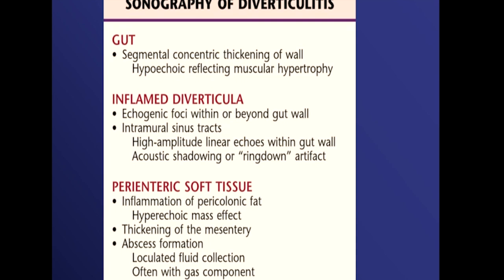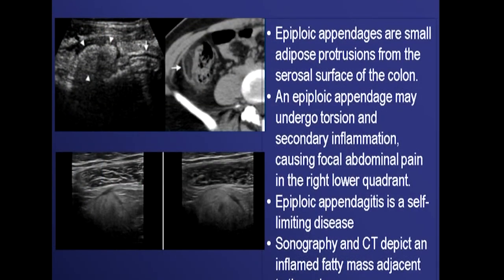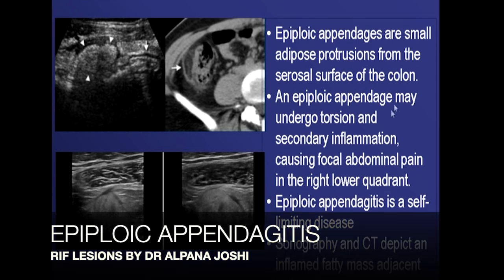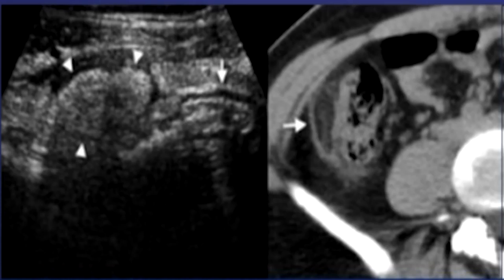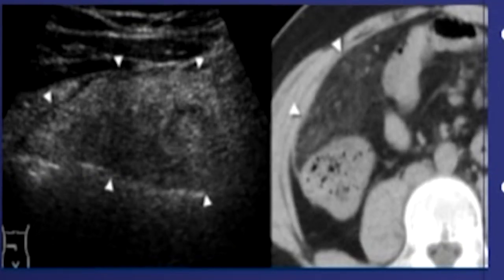Another differential for right iliac fossa pain is epiploic appendagitis — inflammation of small fat-containing appendages that can undergo torsion or secondary inflammation, causing focal abdominal pain in the right lower quadrant. This is a self-limiting condition requiring no operative management, which is why it is very important to differentiate it from appendicitis.